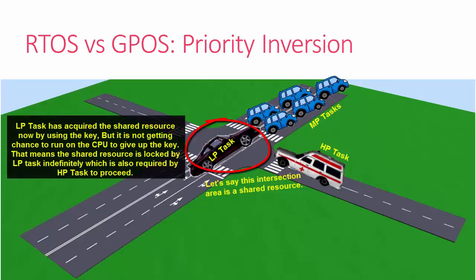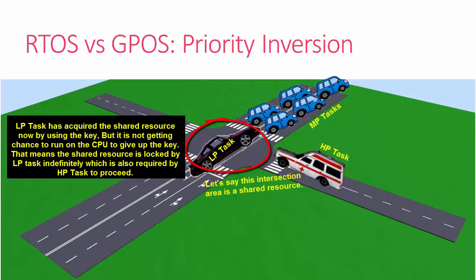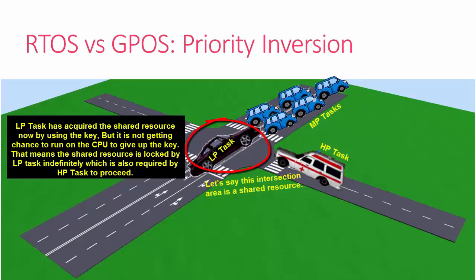...lots of medium priority tasks are running on the CPU, which won't allow the lower priority task to get the CPU. Now when the higher priority task enters, it cannot access this shared area because the key is taken by...